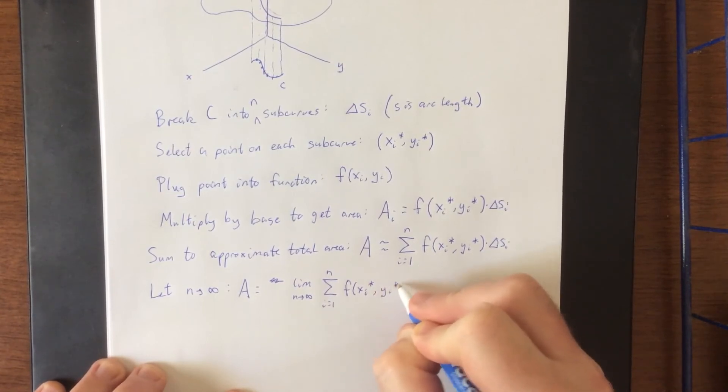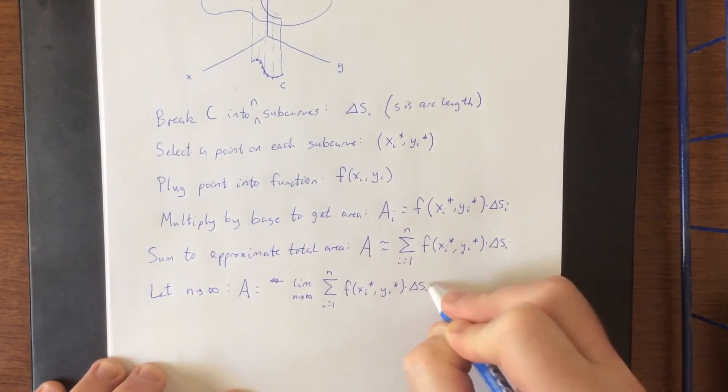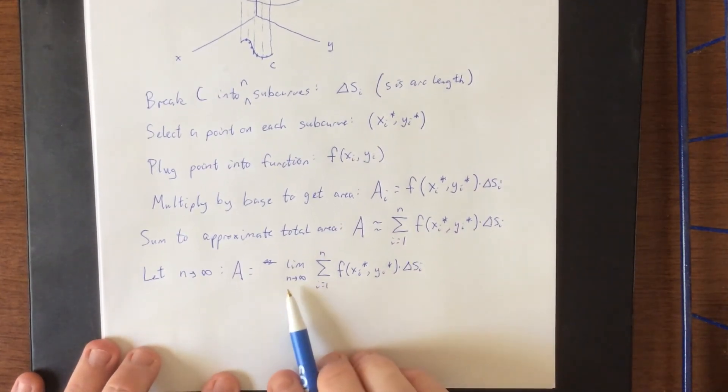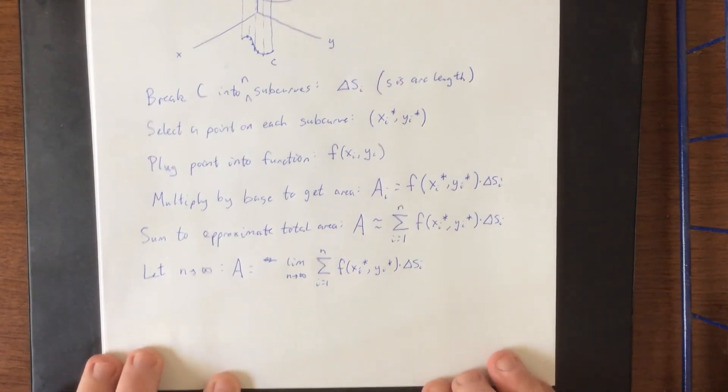Now as I've mentioned many times before, any time we start with limit as n goes to infinity of the sum from i equals 1 to n of something, that thing is about to become an integral.